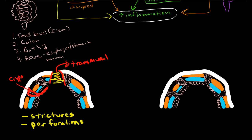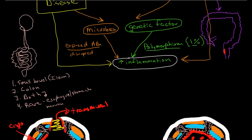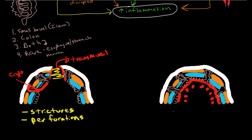With ulcerative colitis, you end up with severe inflammation, but that inflammation politely remains on the surface. The inflammation erodes down into small blood vessels and can lead to significant bleeding. With ulcerative colitis, it always tends to start in the rectum and slowly and steadily works its way upwards as the disease progresses. Major issues with ulcerative colitis include rectal bleeding, which can actually lead to anemia.